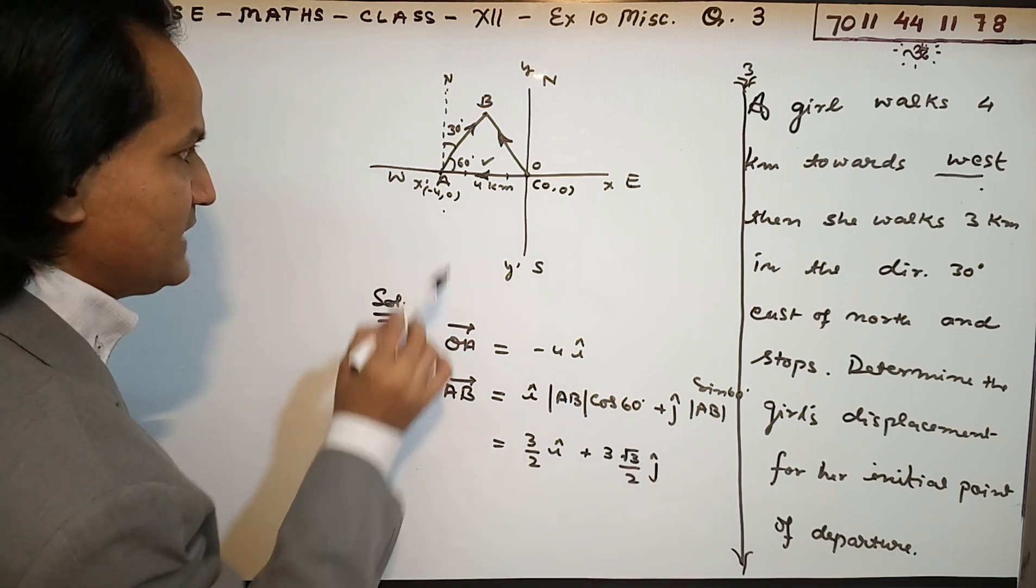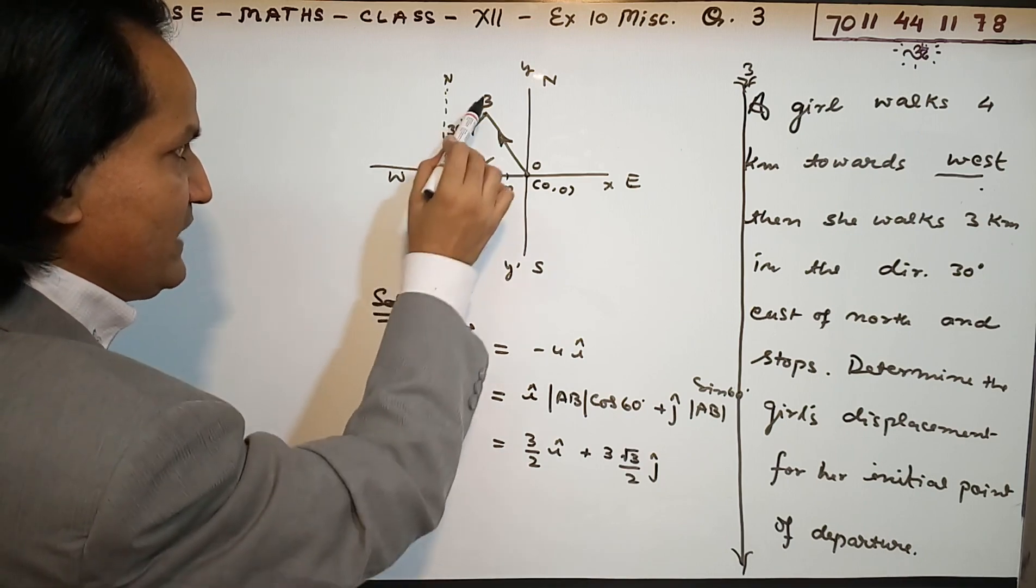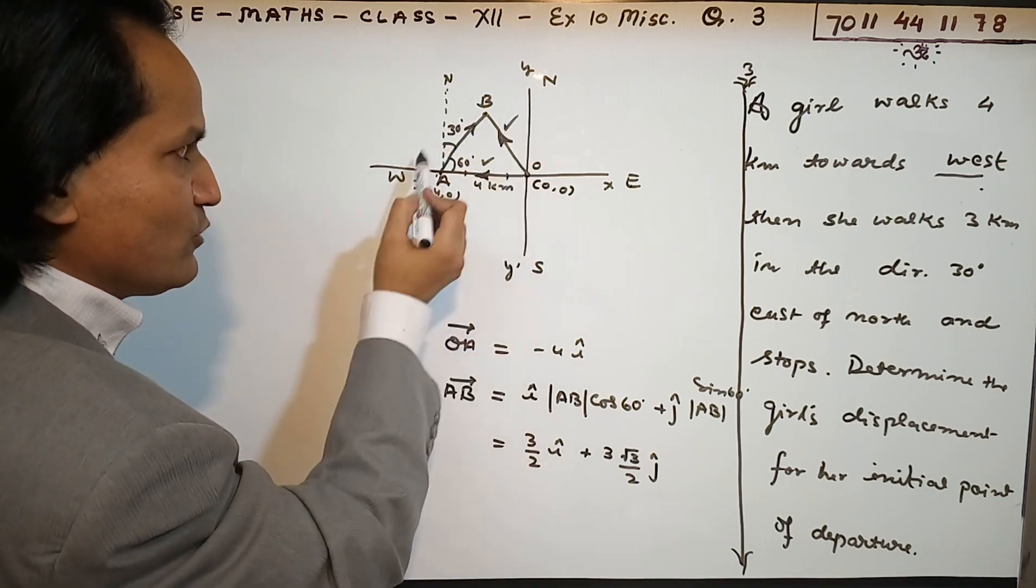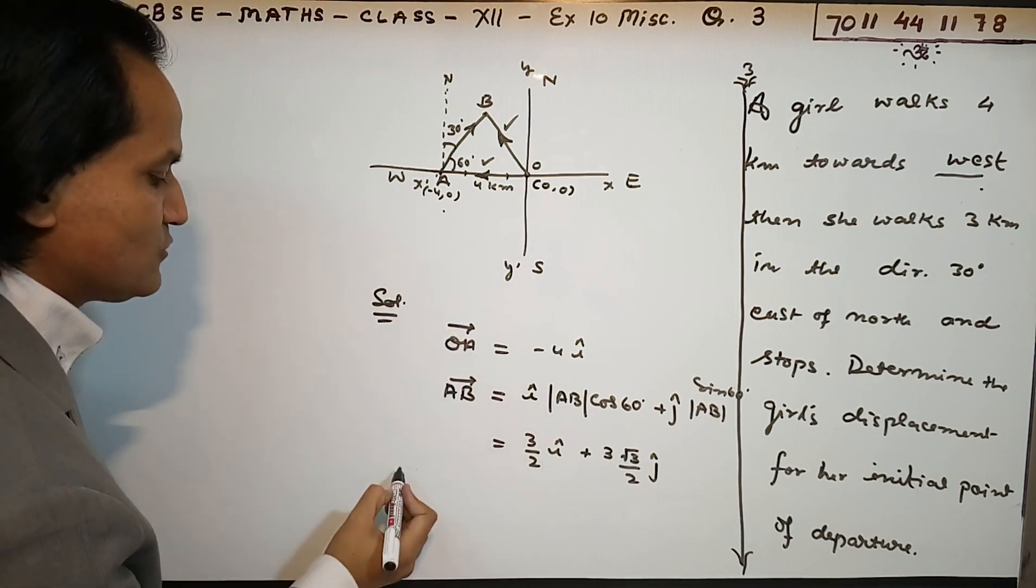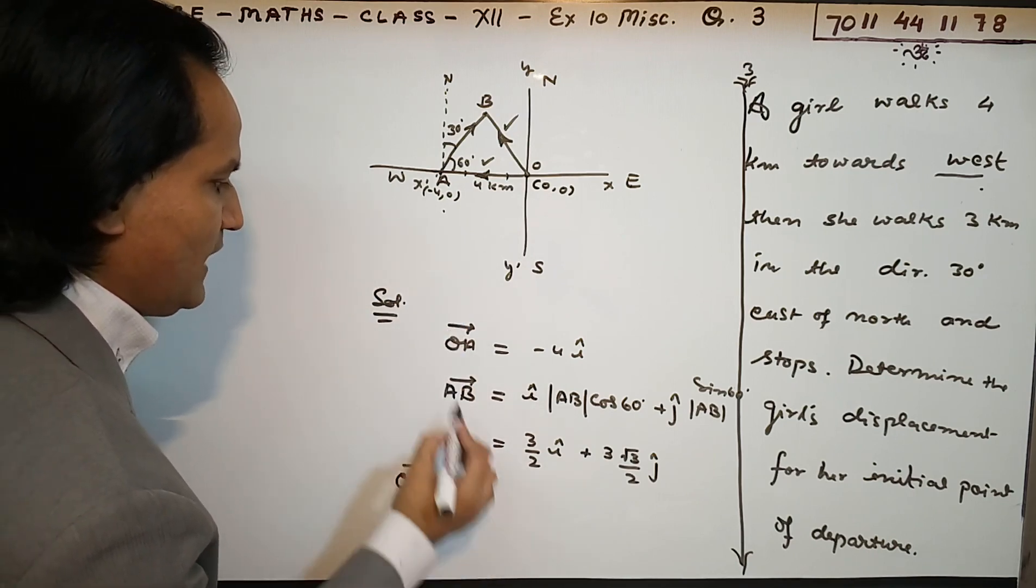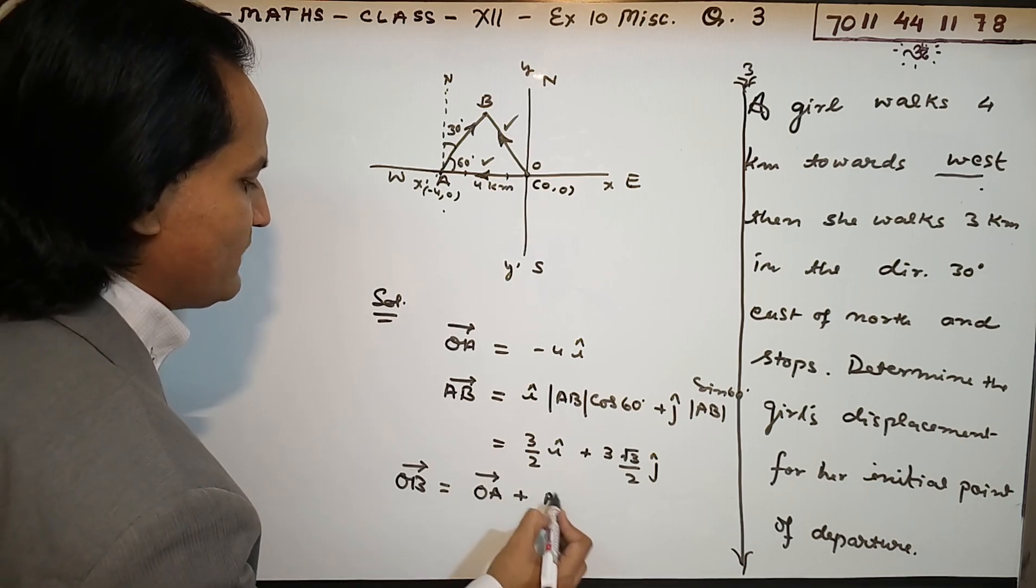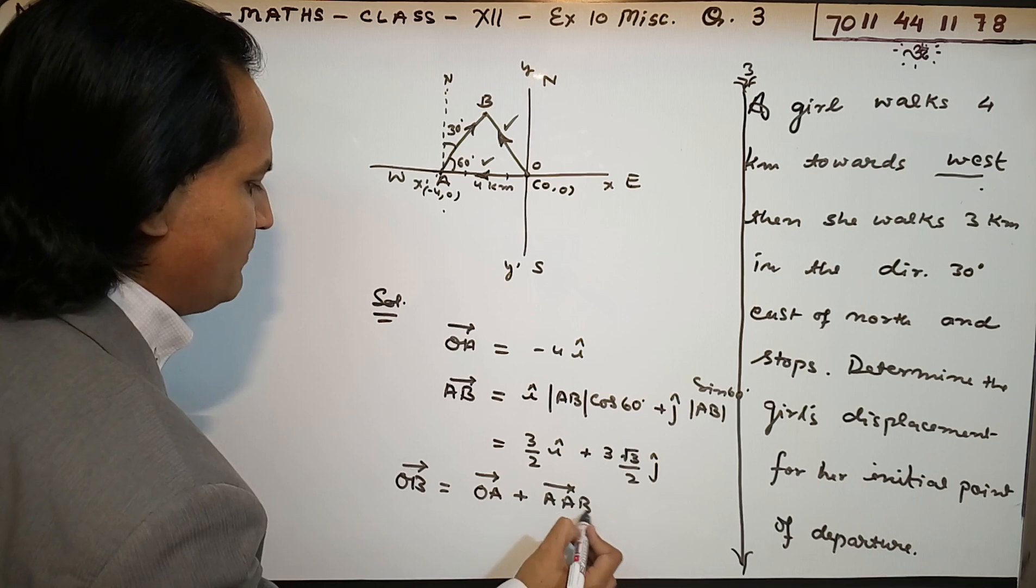Now you have both vectors. Vector OA is here, and vector AB is also here. You need to find displacement. The displacement is vector OB, and what is that? Vector OB equals vector OA plus vector AB. You need to add them.